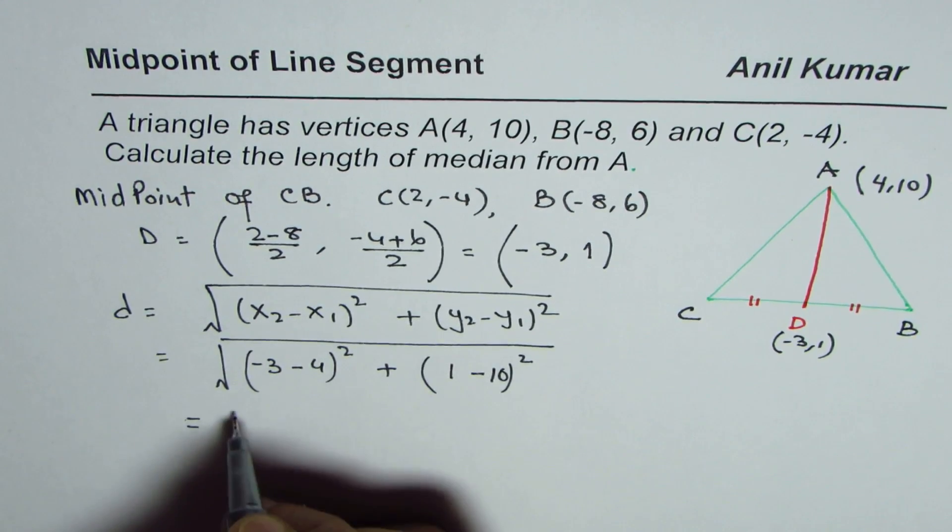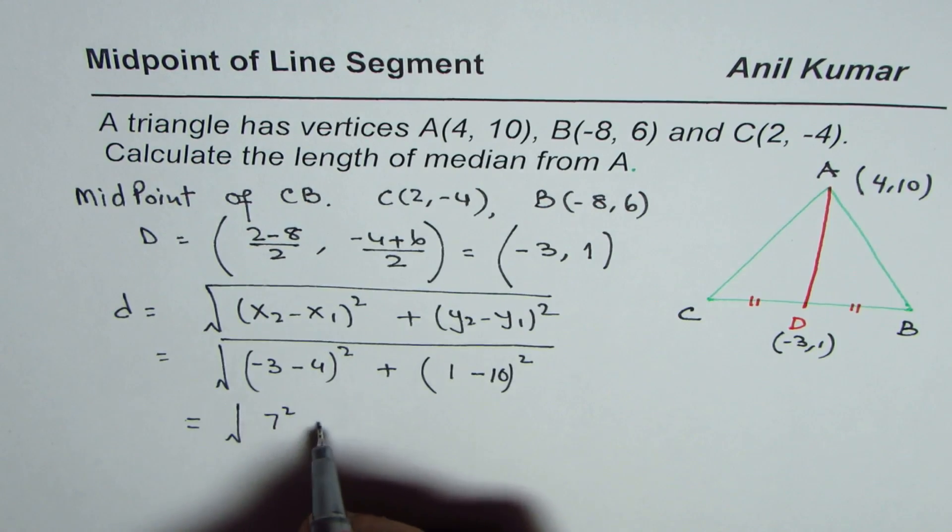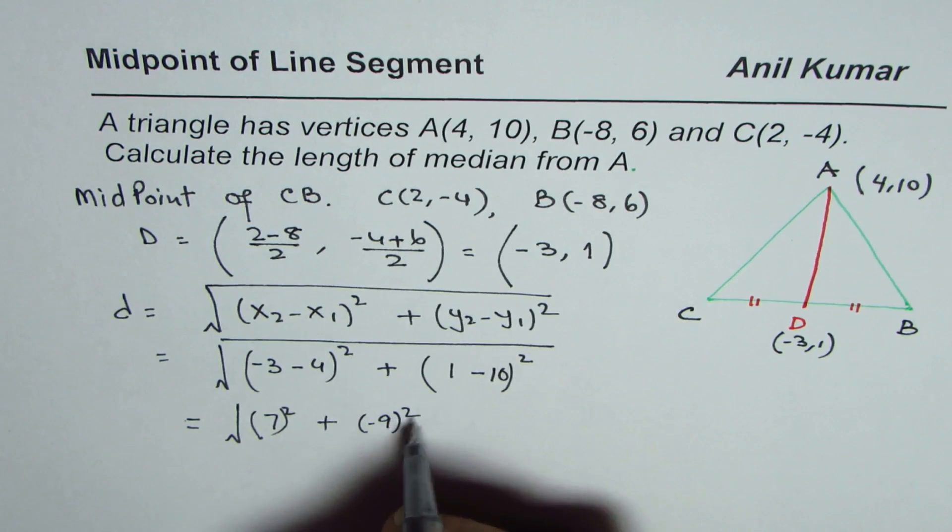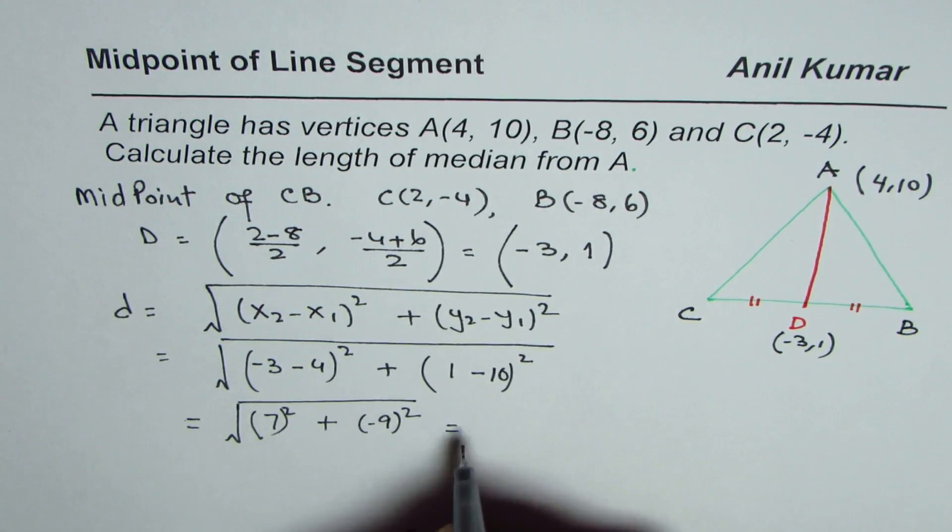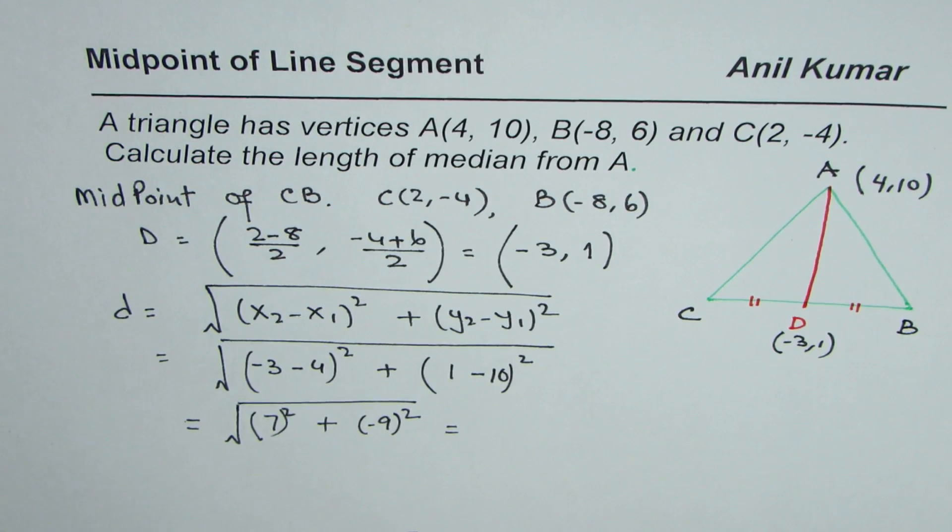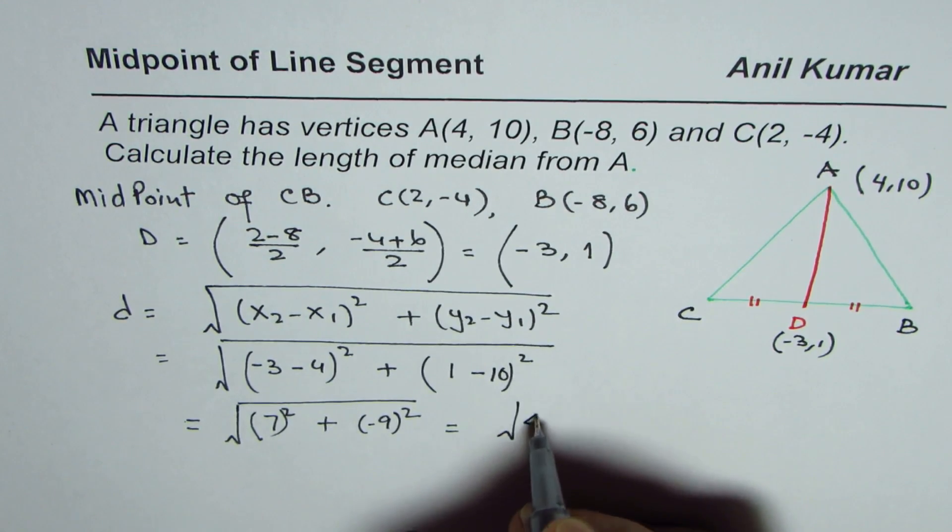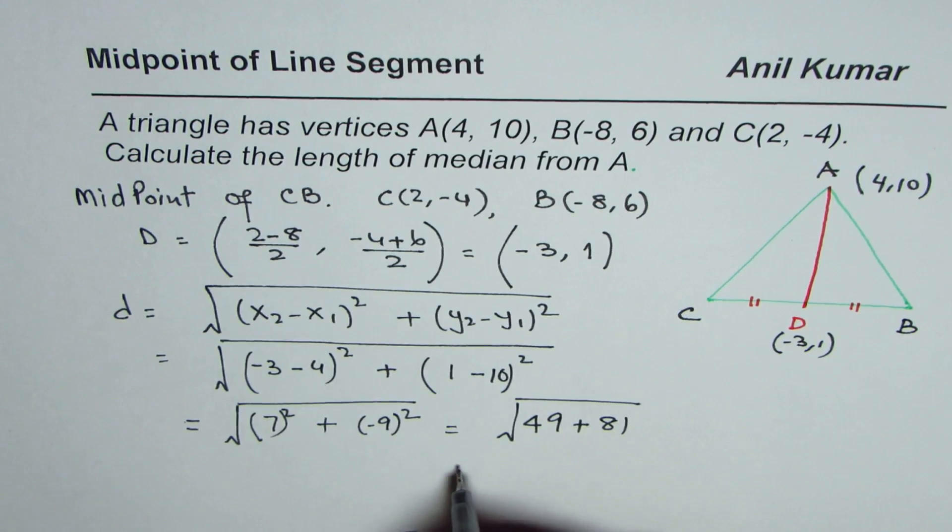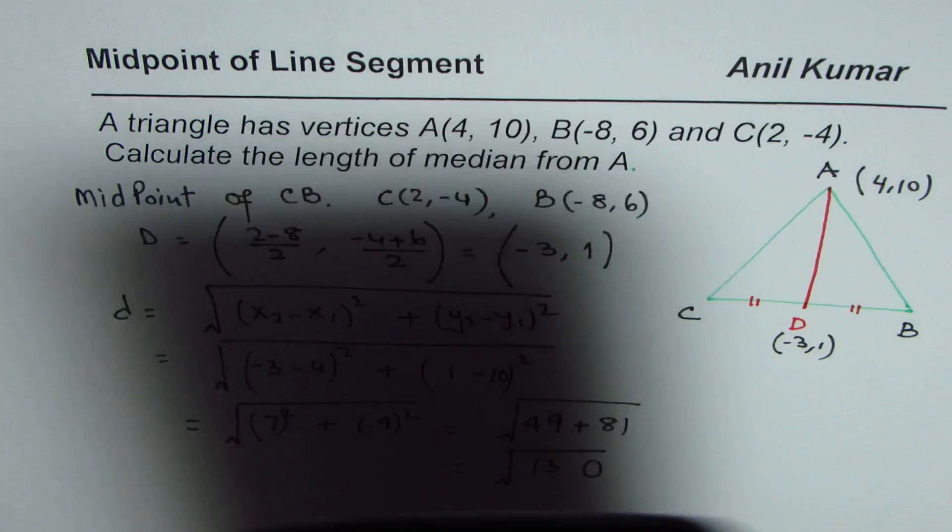So that distance will be (-7) square plus (-9) square. You can use a calculator at this stage. So we have square root of 7 square is 49 plus 9 square is 81. When you add them up you get square root of 130, which you can calculate using a calculator.